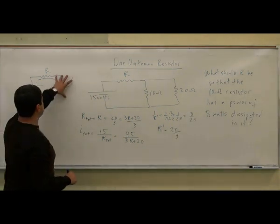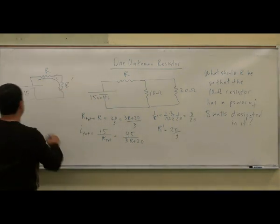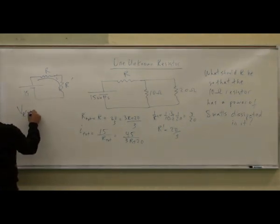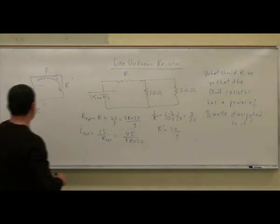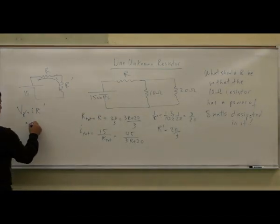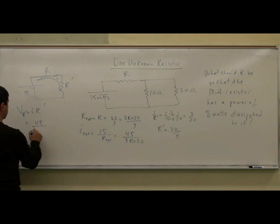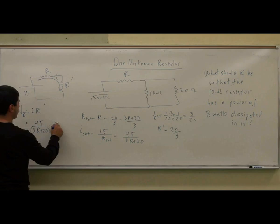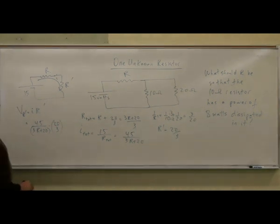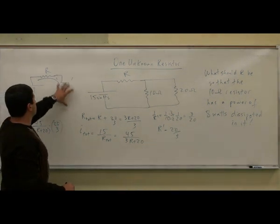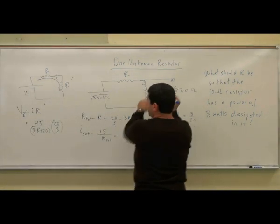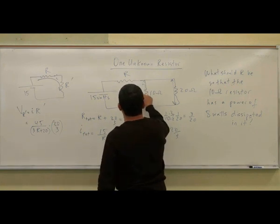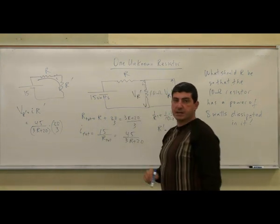So you have 15 R prime. So the current will be the same here and you'll be this value, 45 over 3R plus 20. So now what's going to be the voltage of the R prime? Voltage of the R prime is going to be the current times R prime. And my R prime is 20 over 3, right? So it's going to be 45 over 3R plus 20 times R prime is 20 over 3. That's going to be the voltage of this. Then you argue that the voltage of this is the same as the voltage of this, which is the same as the voltage of this because they're in parallel. So this is V R prime, V R prime, same voltage.